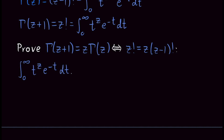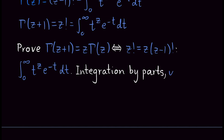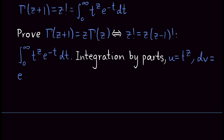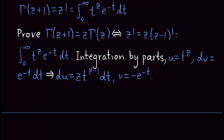We perform integration by parts. Let u — the function we want to differentiate — equal t to the z. And let dv — the function we want to integrate — equal e to the minus t, dt. Then du is equal to, by the power rule, z times t to the z minus 1, dt. And if we integrate dv, it's very simple: v is just equal to minus e to the minus t. Fantastic.